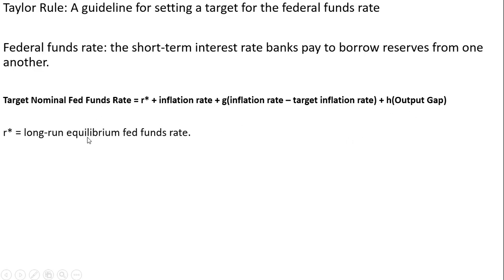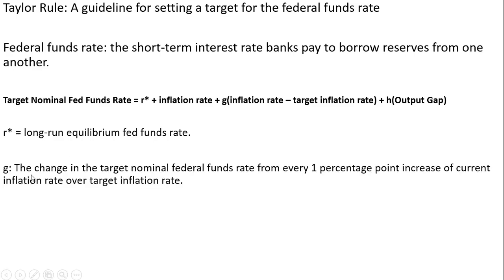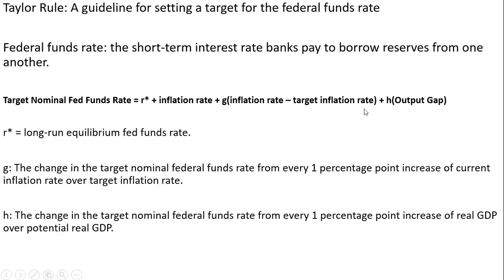Let me explain what those features are. R-star is the long-run equilibrium Fed funds rate. This parameter G is the change in the target nominal federal funds rate for every one percentage point increase of the current inflation rate over the target inflation rate. H is the change in the target nominal federal funds rate for every one percentage point increase of real GDP over potential real GDP.